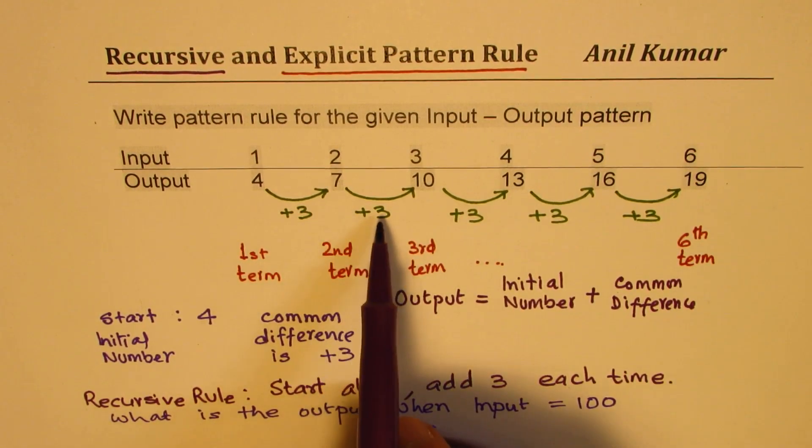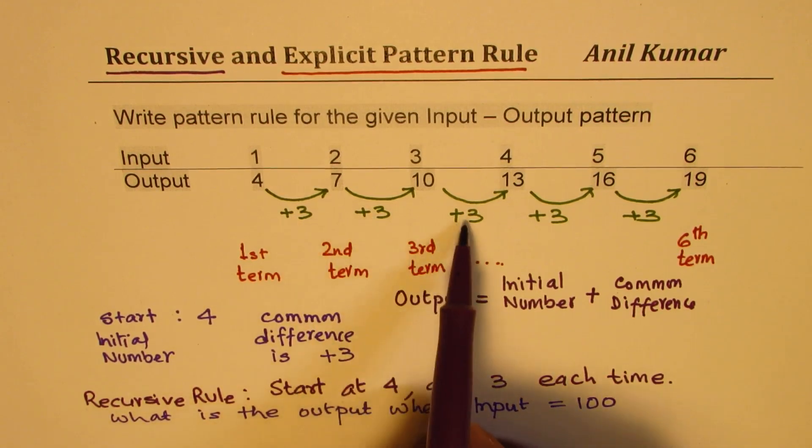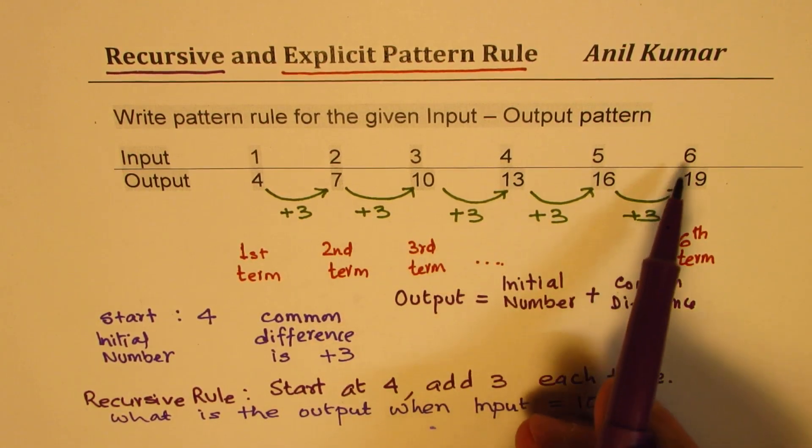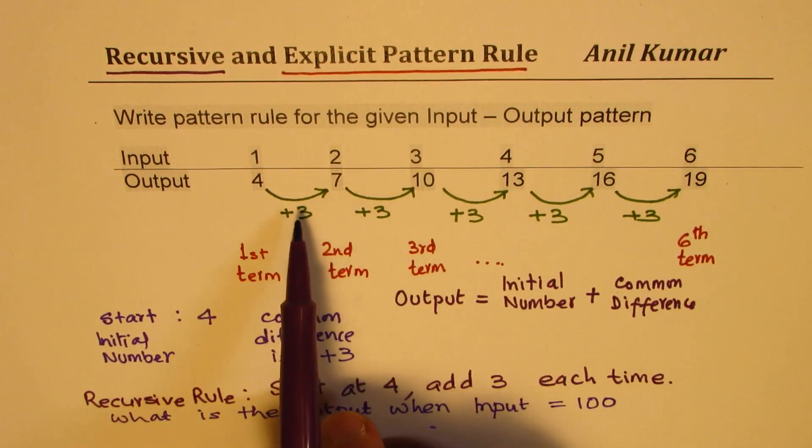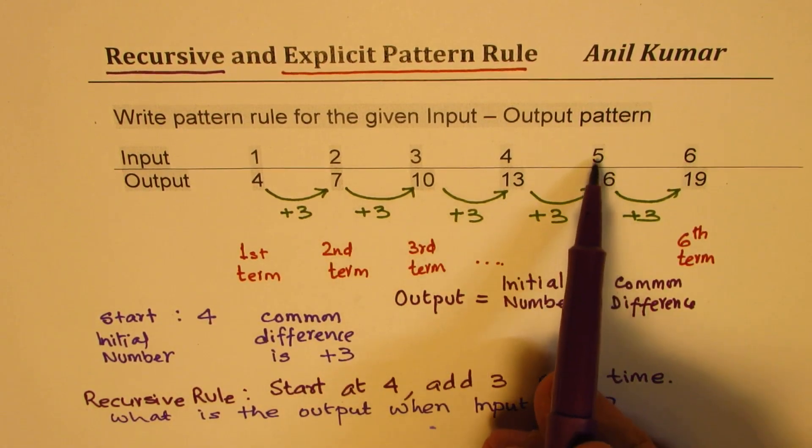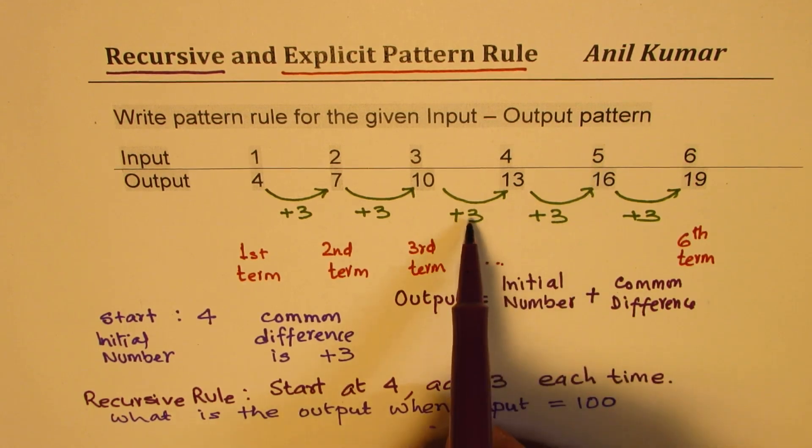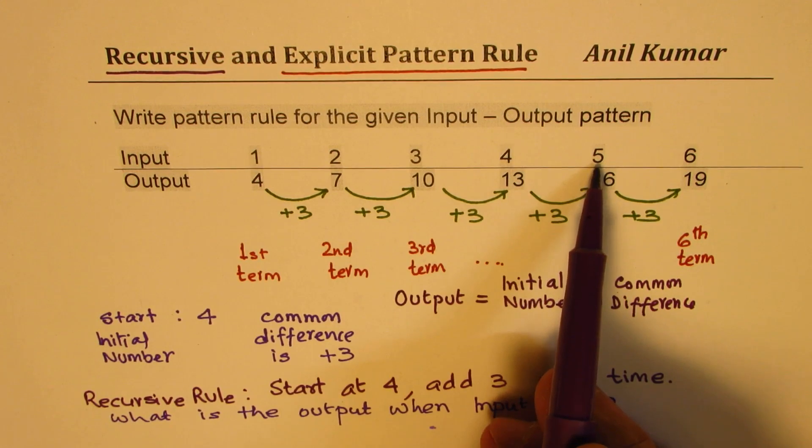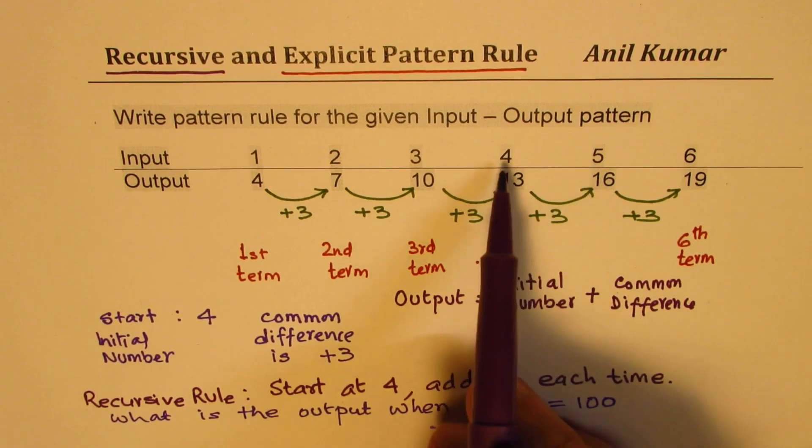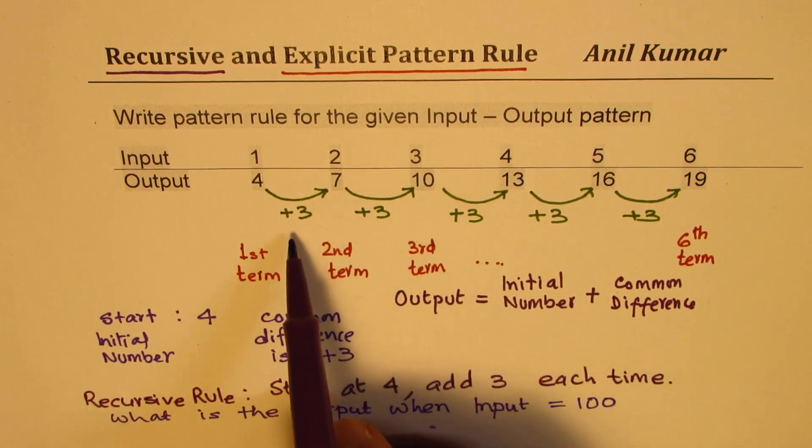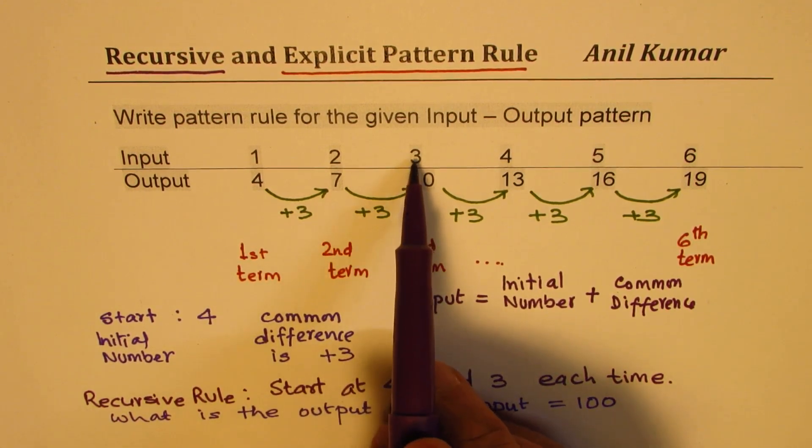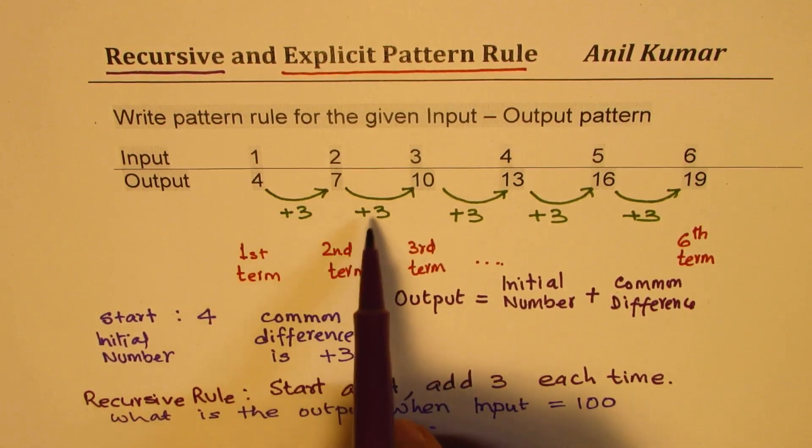How many times? If I want to find output for sixth number, how many times did I add 3? 1, 2, 3, 4, 5. That is 1 less than 6. Perfect. If I want to find output for fifth number, how many times did I add 3? 1, 2, 3, 4 times. 1 less than 5. Correct? For 4, I have added 3 three times. And for the third term, I have added 3 only 2 times.